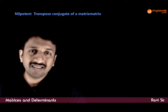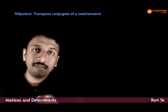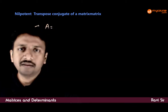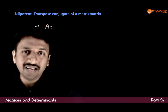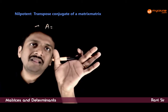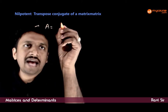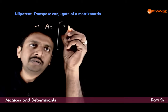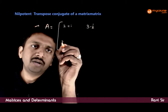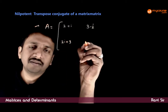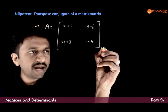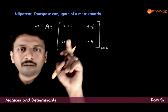In this video, let us look at what the transpose conjugate of a matrix is. If you have a matrix A of any order containing some complex entries — the entries need not be real — so we have a matrix A: [2+i, 3-i; 2i+3, i-4]. So we have a 2 by 2 matrix containing complex entries.